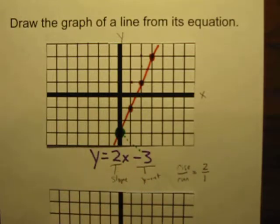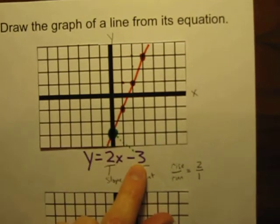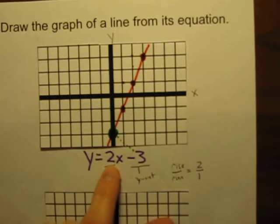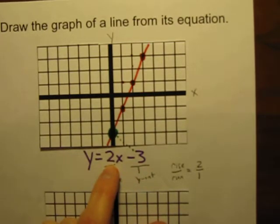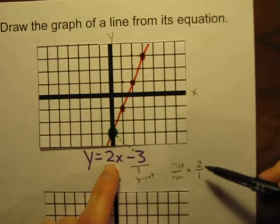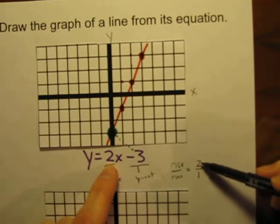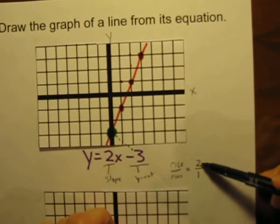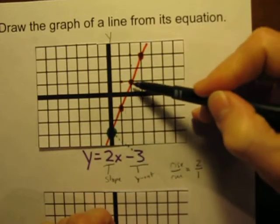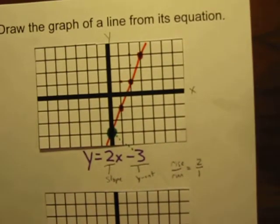I identified our starting point will be our y-intercept, was negative 3. The 2 is our slope. I converted 2 into a fraction, making it 2 over 1, so I know what the rise over run will be, up 2 over 1, and I just put those points on the graph. Pretty easy.